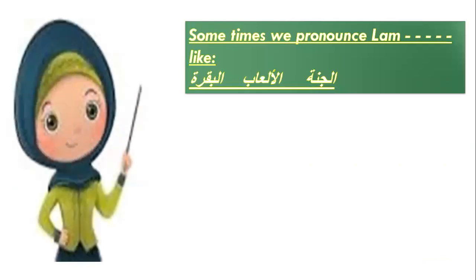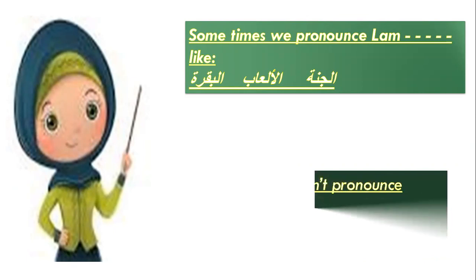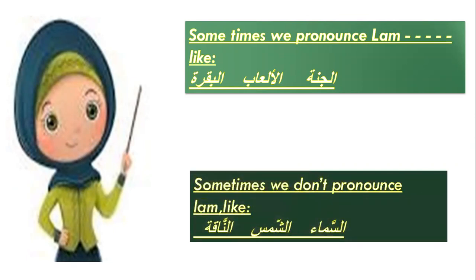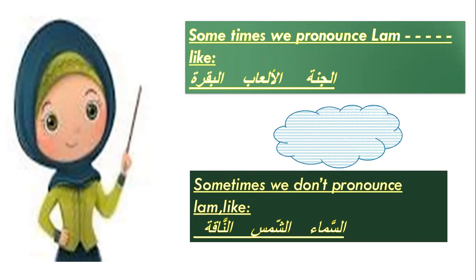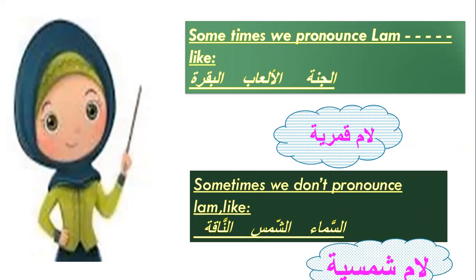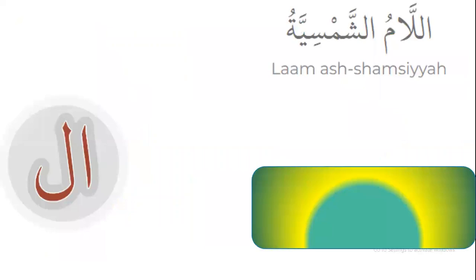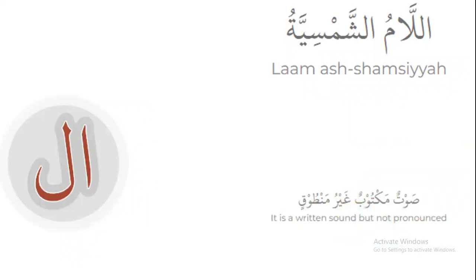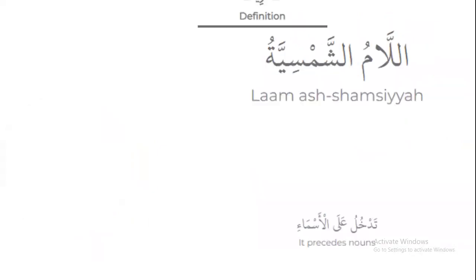Sometimes we pronounce Lam, like in 'al-jannah,' 'al-al-aab,' 'al-baqara.' The first type, when we pronounce the Lam, it is Lam-Kamariya. The second type, when we don't pronounce the Lam, it is Lam-Shamsiya. This Lam is written but not pronounced. It precedes nouns only — we can find this Lam with nouns, not with verbs.